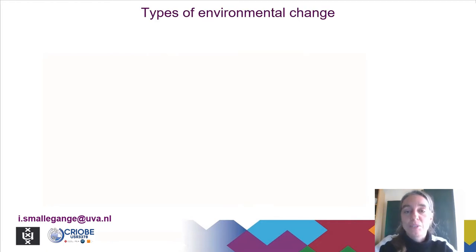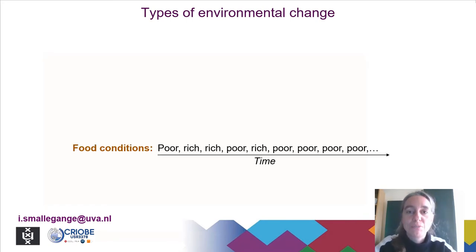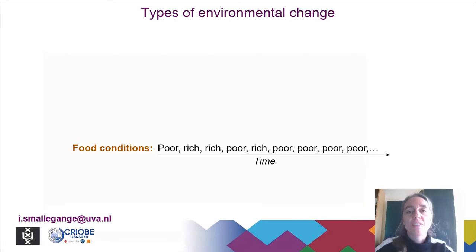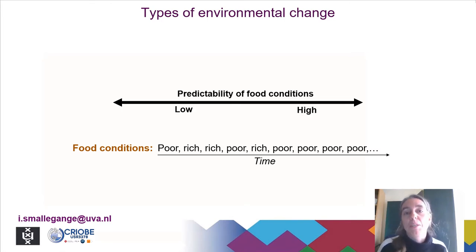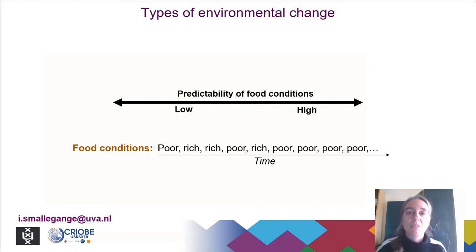Let's look at types of environmental change. I will discuss two types, starting with a time series of food conditions. Imagine an environment in which food conditions can be poor or rich and these conditions vary over time — one day can be poor, tomorrow can be rich. The way in which these food conditions change over time can be predictable or not. There can be high predictability — if today food conditions are rich, tomorrow they're rich as well — or predictability can be very low.